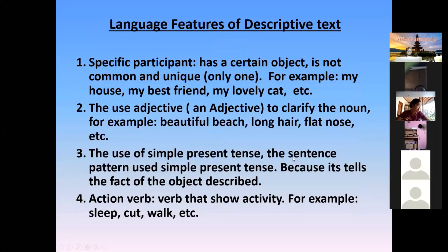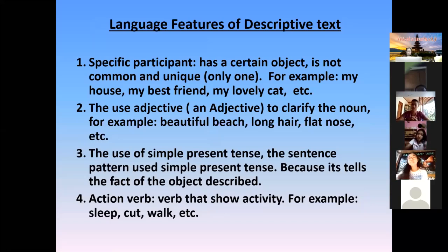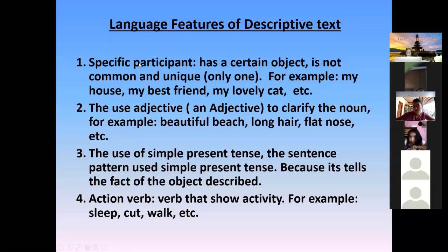Next — language feature of descriptive text, struktur bahasanya ya. The first one is specific participant: has a certain object, is not common and unique, only one. For example: my house, my best friend, my lovely cat. Jadi, kalau kita mau menulis descriptive text, kita hanya fokus pada satu object saja — tidak lebih dari satu.